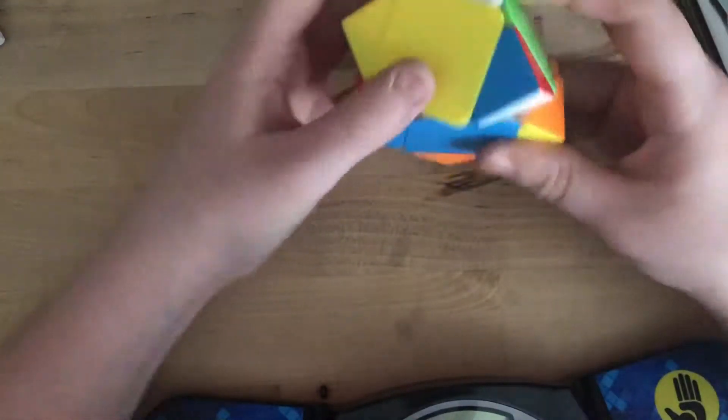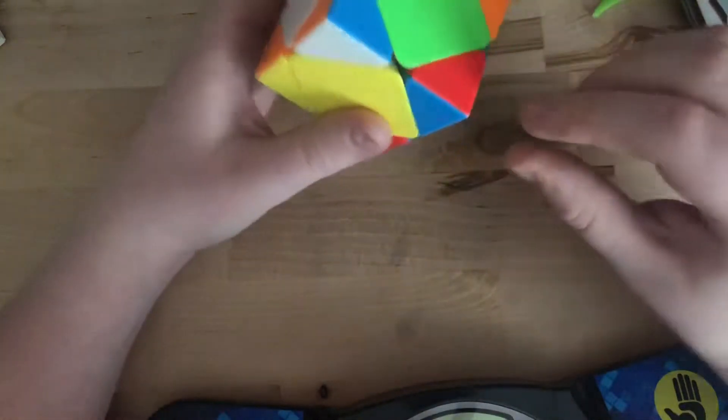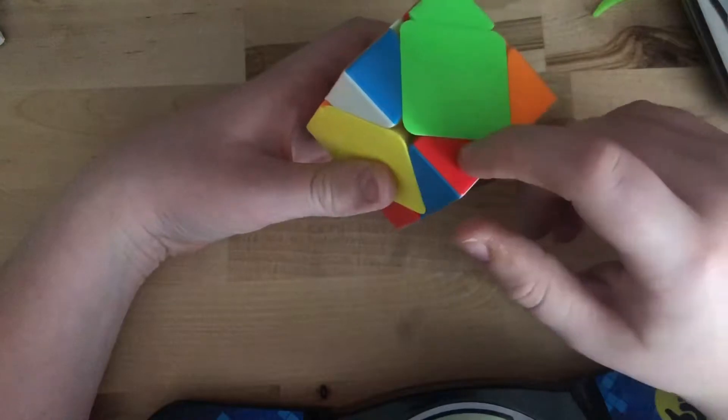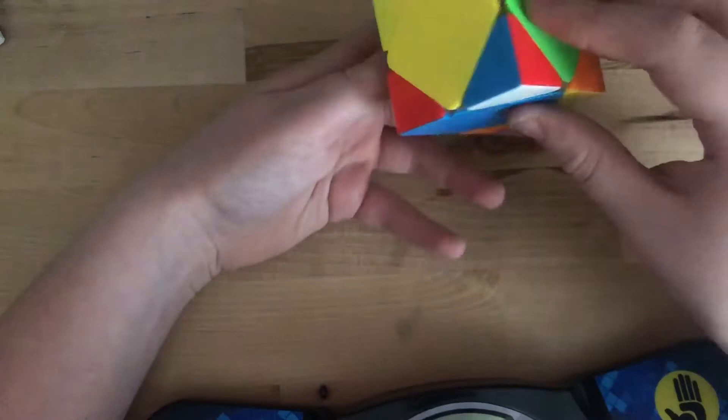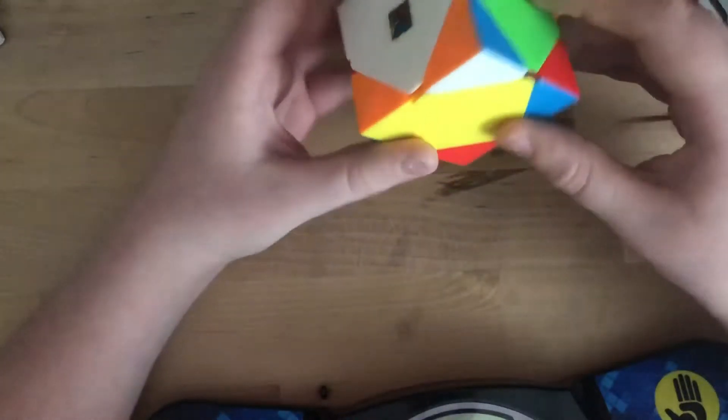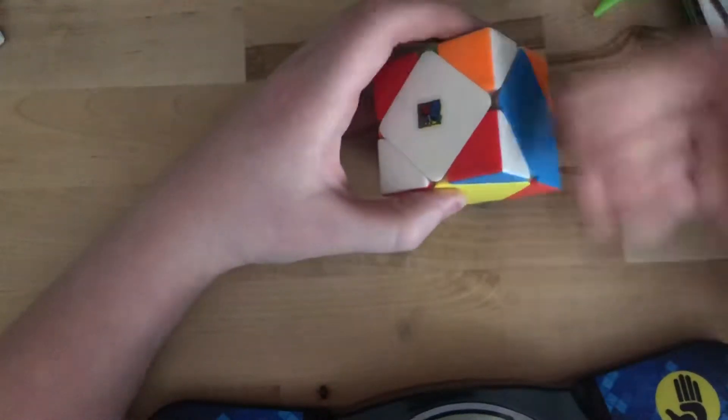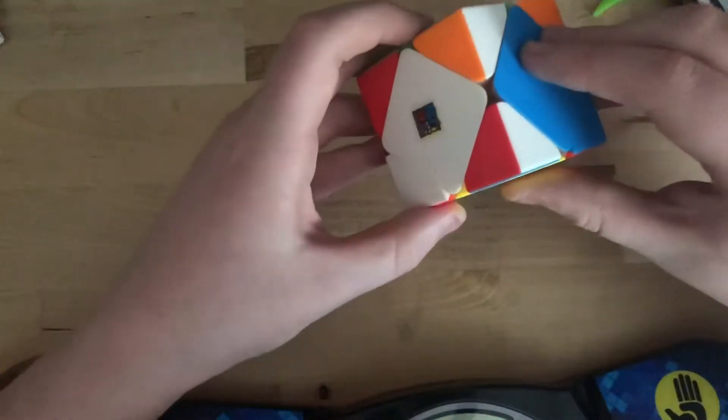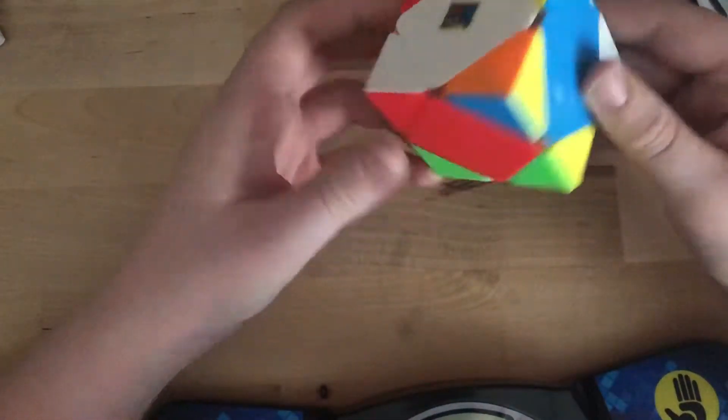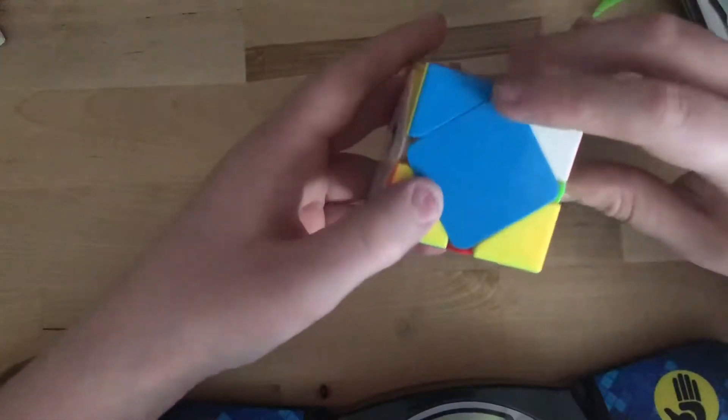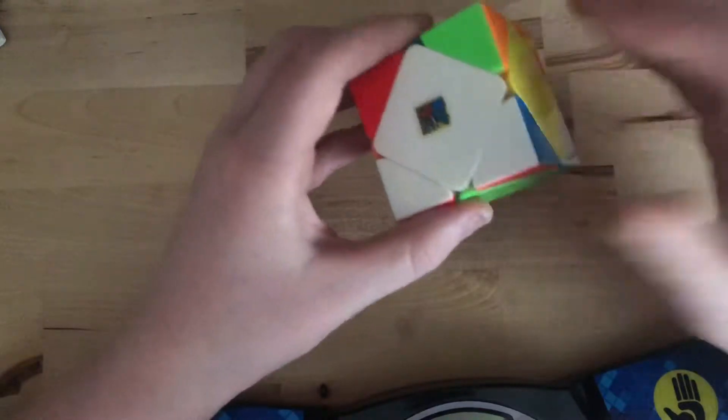Now this one has blue and red on it. Now we're looking for red because we're getting the red top layer. So as you can see, when I move it up like this, it's in the wrong orientation. How do I fix that? Well, before you move it up, switch it like this.